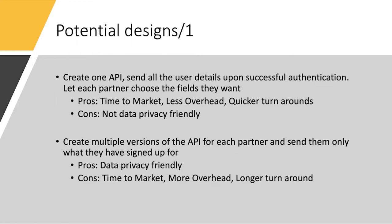The second solution: create multiple versions of the same API for each partner and send them only what they've signed up for. If one partner needs five attributes, send only five; if another needs six, send six — giving full control over what is shared with each vendor. The biggest problem is time to market: if your business follows agile practices and onboards new vendors frequently, this is time-consuming because with every new partner you have to create a new version of the API and map the required fields. This is also a bigger overhead with longer turnaround times.